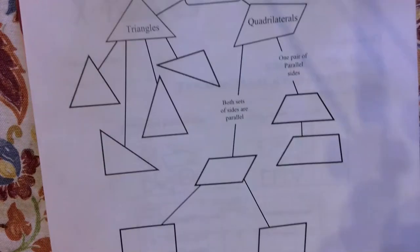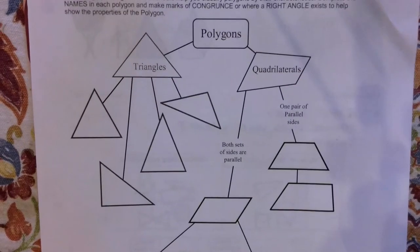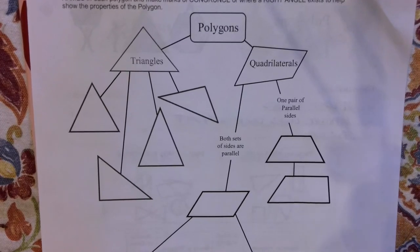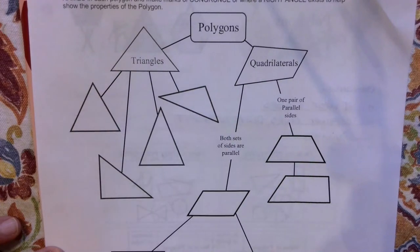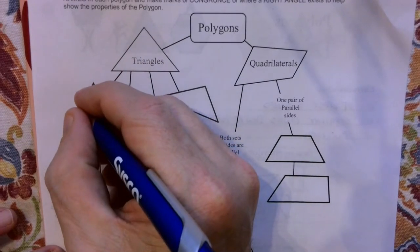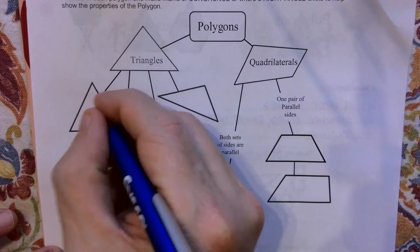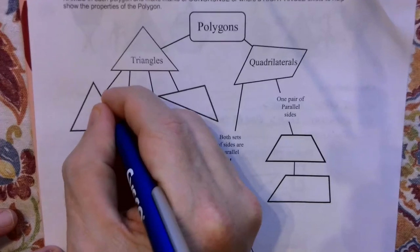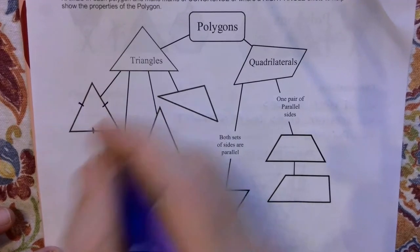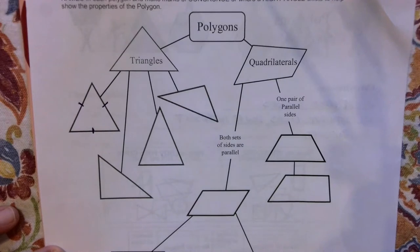We're going to the triangle section first. There are actually six different types of triangles, but we're going to talk about three of them. A triangle that has three equal sides — shown by dashes on each side, meaning all those sides are the same — and if I put arc angle markers at each corner, that tells me all three angles are congruent.